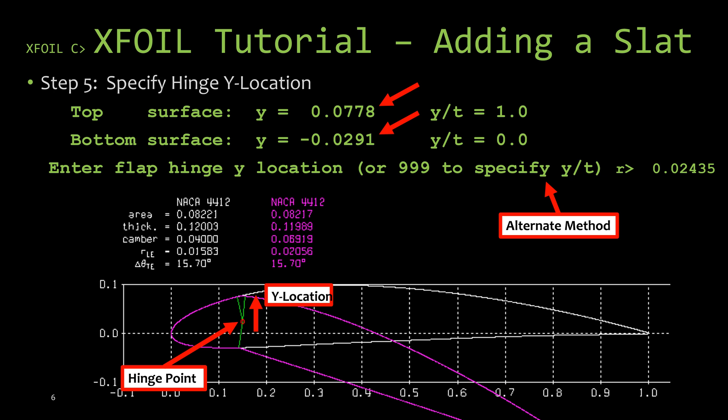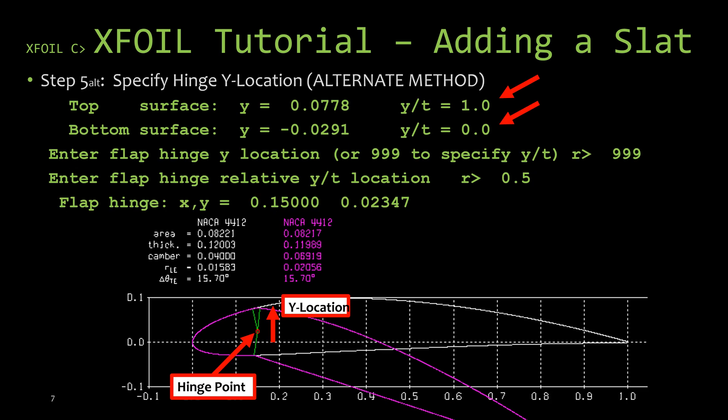So you can do a quick calculation using the y location of the top and bottom surface you see there to figure out where the midpoint would be. Or if you type 999 and hit enter, then you can just specify the relative flap hinge location from 0 to 1, 0 being the bottom surface, 1 being the top surface.